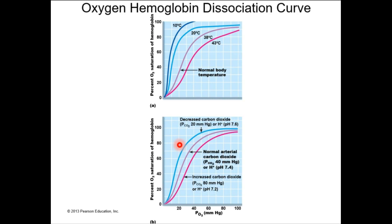Therefore, elevated carbon dioxide is going to do the same thing that elevated acid did — and that's going to be a right shift. Conversely, if you have low carbon dioxide, you're going to have a more basic internal environment, and that is going to be a left shift. I'm comfortable lumping elevated carbon dioxide with acidity and low carbon dioxide with basicity, so you just have to remember what acids and bases do.